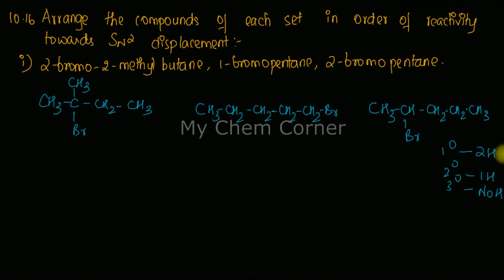Alternatively, you can identify carbon nature by the number of alkyl groups bonded to it. A primary carbon has one R group, a secondary carbon has two R groups, and a tertiary carbon has three R groups bonded to it. Either method — counting hydrogens or counting alkyl groups — makes it easy to classify primary, secondary, and tertiary carbons.